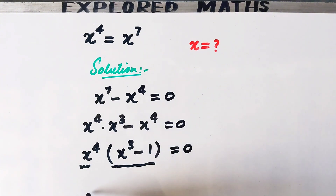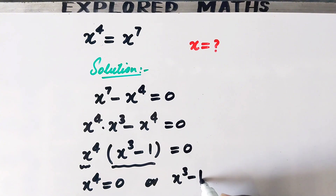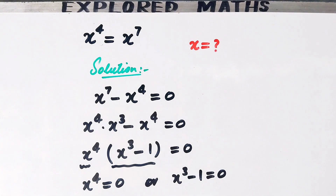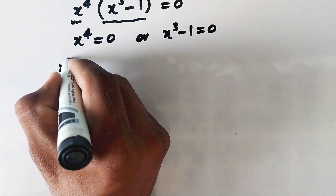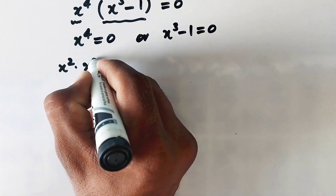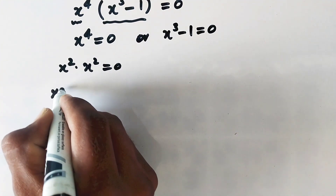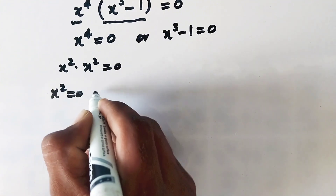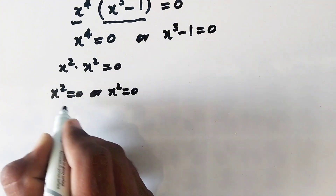We can see there are two factors equal to zero. So we write x to the power 4 equal to 0, or x cubed minus 1 equal to 0. Now x to the power 4 can be written as x squared times x squared equal to 0, giving us x squared equal to 0 or x squared equal to 0.